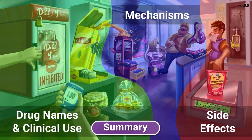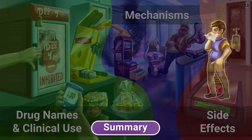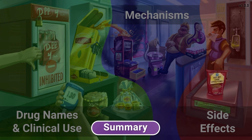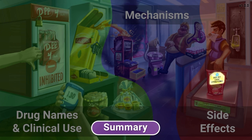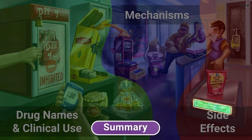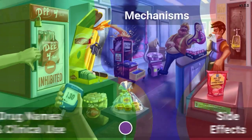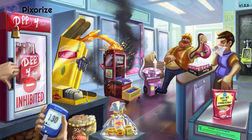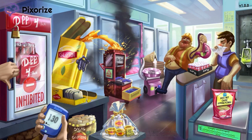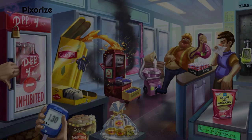Side effects of these drugs include an increased risk of urinary tract infections and upper respiratory infections. Notably, these drugs typically do not cause hypoglycemia and usually have no effect on weight. And with that, we're finally done with the DPP-4 inhibitors — let's grab that fresh pack of Dr. Pepper and get out of here. See you in the next one.